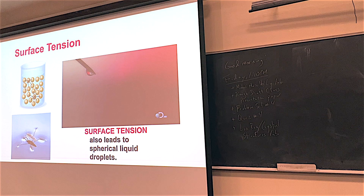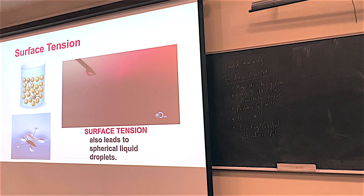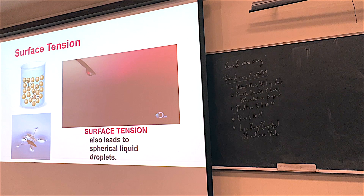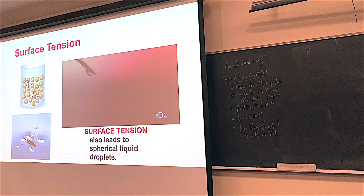Surface tension allows insects to walk on water and water drops to hold together. When oil spills or chemicals get into water, they break the surface tension, causing insects to sink — and if the insects sink, birds can't get them, affecting the whole food cycle. If you drip tap water, the little droplets hold together — that's another effect of surface tension.